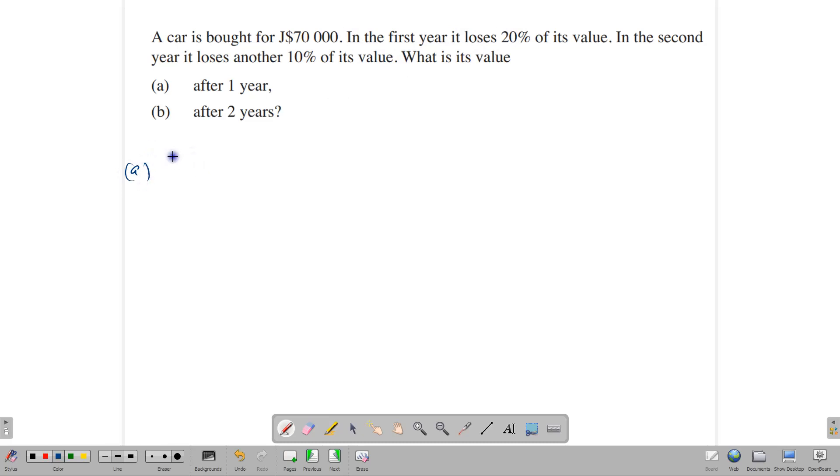In year one, it's going to lose 20% of its value. Let's find what 20% of its value is. That's 20% of $70,000, and we can divide that. And we have 7,000 times 2, that's $14,000. So the car would lose $14,000 worth of its value in the first year, which means that the value of the car at the end of year one is going to be $70,000 minus $14,000. And that gives us $56,000.